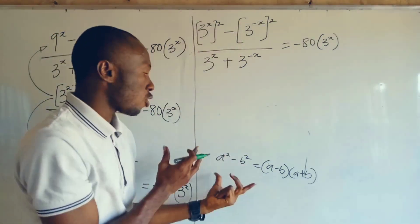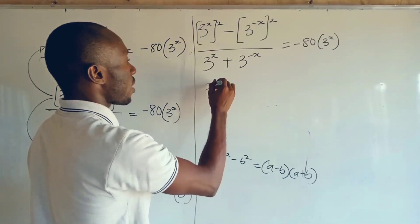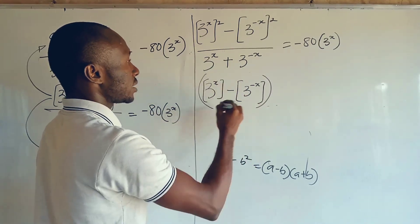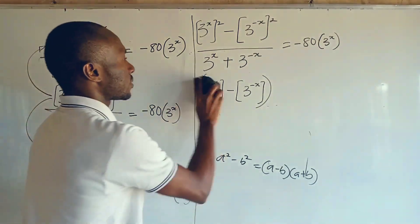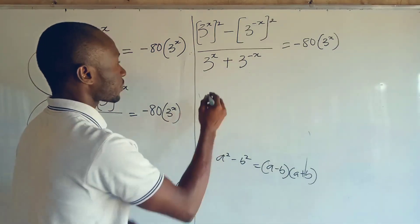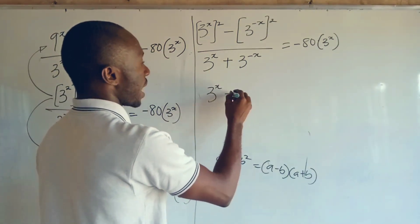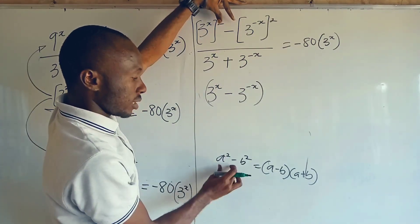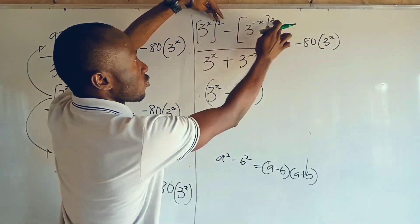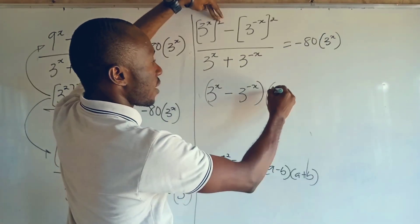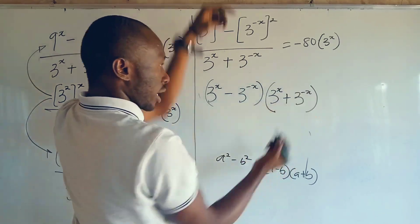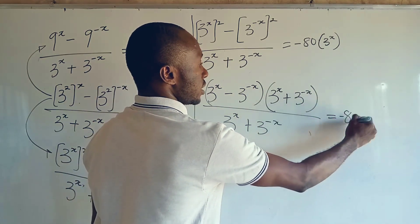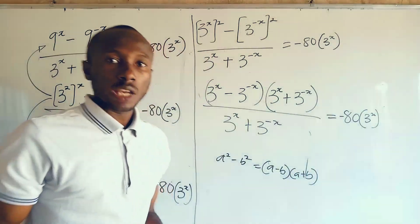So applying the concept of difference of two squares, I will have 3 to the power of x as my a, minus 3 to the power of minus x. So the numerator becomes: 3 to the power of x minus 3 to the power of minus x, times 3 to the power of x plus 3 to the power of minus x — all upon 3 to the power of x plus 3 to the power of minus x — equal to minus 80 times 3 to the power of x. You can see that the common factor cancels, so the fraction reduces.